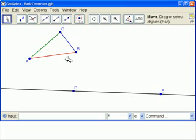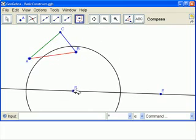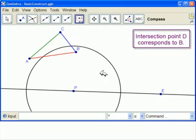The first part of copying the triangle is to copy this base where A goes to P. So we need this distance. So we get our compass tool, we measure the distance of that line segment, come down to P. This intersection point here will be that new point.